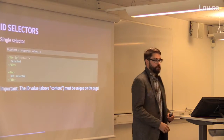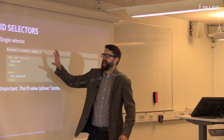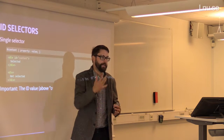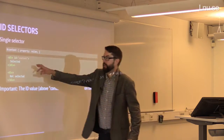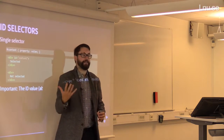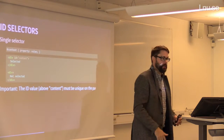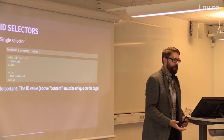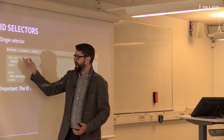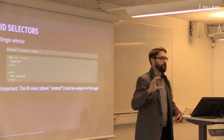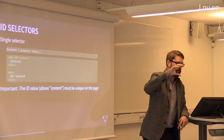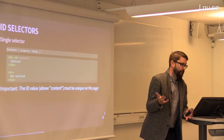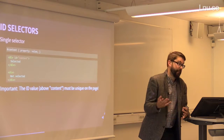If an ID selector is present, that rule will be more important than other rules. There's a great article explaining specificity using Star Wars characters: the Emperor is like an ID selector, Darth Vader like a class selector, and Stormtroopers are tag selectors. The Emperor always beats Darth Vader and the Stormtroopers. Don't be fooled into thinking it's always the last rule — specificity takes precedence. I'll show you in the browser how to see this more clearly.